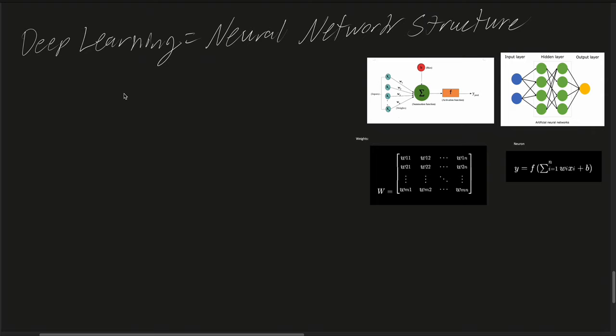To segue into our lesson, since today we're focusing on neural network structures, let's imagine a network of neurons forming together to form a synaptic-like network, which are built with weights, biases, and activation functions.